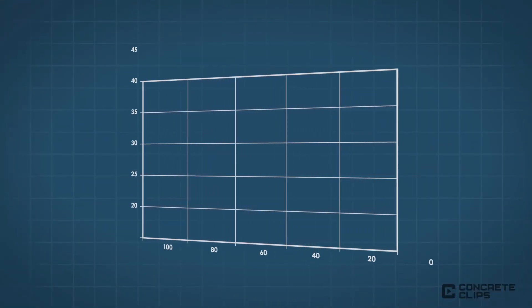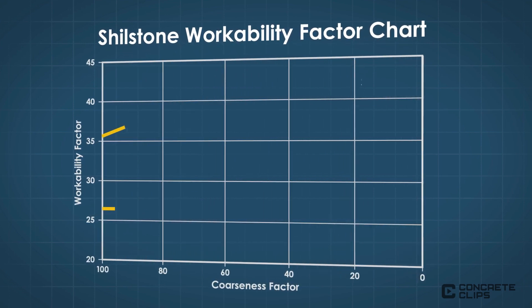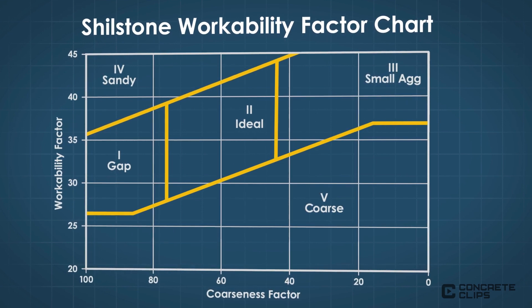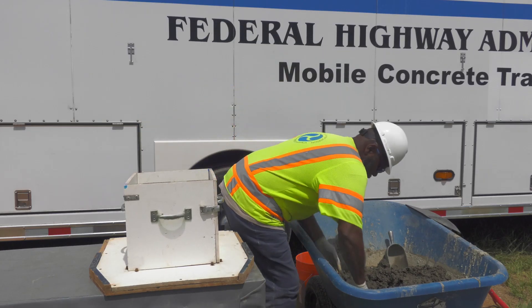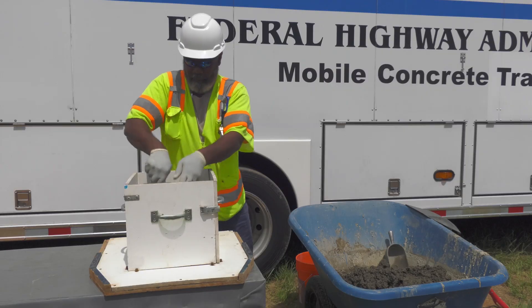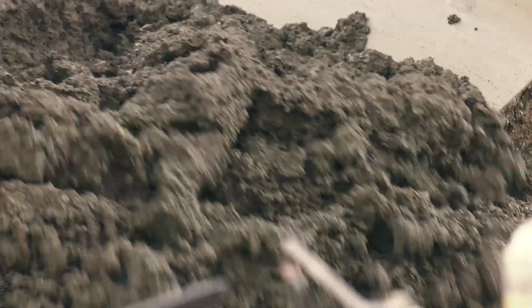While specifying coarse and fine aggregate separately is useful for managing stockpiles, it is the combined gradation that is critical for performance. In the 1990s, pioneering work by Shillstone led to the development of the workability factor chart for the combined gradation, based on field experiments focused on reducing segregation. The combined gradation affects the void content of the concrete mixture, with denser gradation resulting in decreased void content. Combined gradation, maximum aggregate size, and void content affect relative aggregate proportions and cement and water requirements.